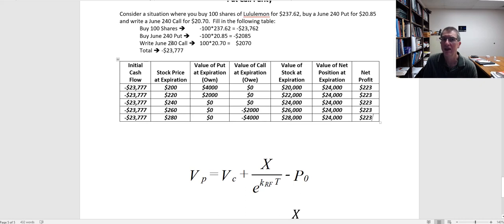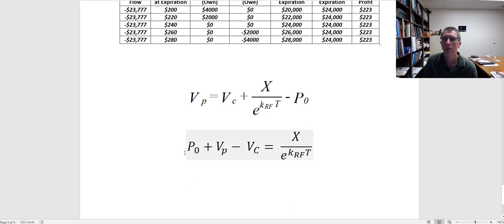Now jump back up here to what we did. We bought the stock, so that's our P0. We bought the put, that's the value of the put, and we wrote the call. So buy the stock, buy the put, write the call, and we lock in the exercise price, but we have to wait for that. So the value we pay up front should equal the present value of the exercise price discounted back at the risk-free rate of return.